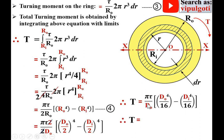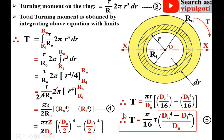So T equals π/16·τ·(DO⁴ - DI⁴)/DO. This is equation number 5, the final equation for maximum torque transmitted by hollow circular shaft.